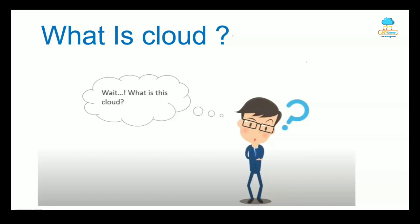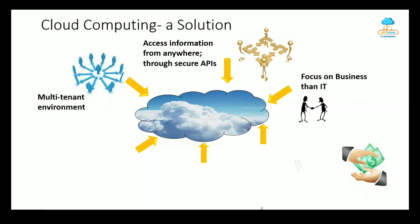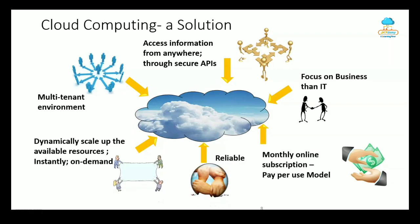Let me explain cloud computing with a simple example. Suppose you have a software company with a hundred people creating complex programs. This requires a lot of resources — office space, power, network, servers, computers, storage devices, and cooling systems. Cloud computing is the solution here. You can access information from anywhere through secure APIs, just focus on your business rather than your IT infrastructure, and pay on a monthly subscription pay-as-you-go model.